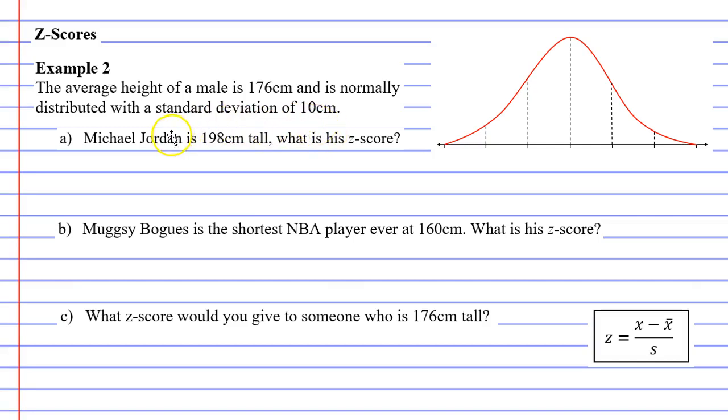Now there are actually three parts to this question - A, B, and C - but before we get in there I would like to label my Z scores on this bell curve here. We know that our mean is 176 centimeters and our standard deviation is 10 centimeters. So the mean goes right in the middle, 176 centimeters.